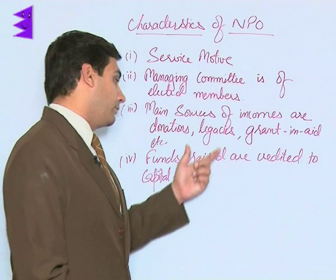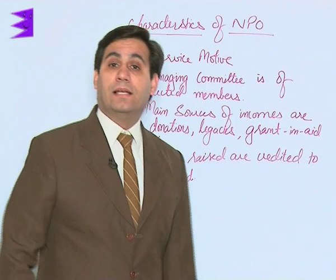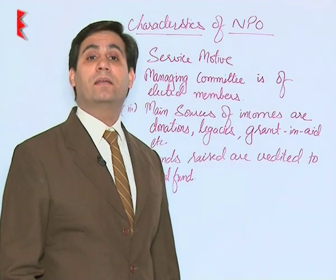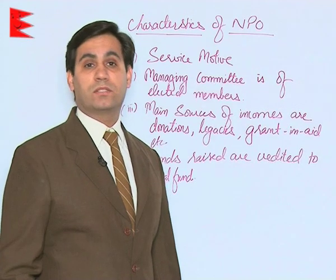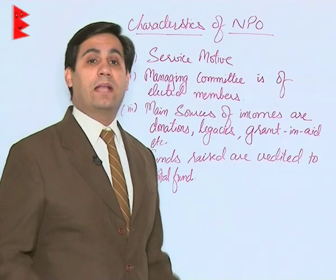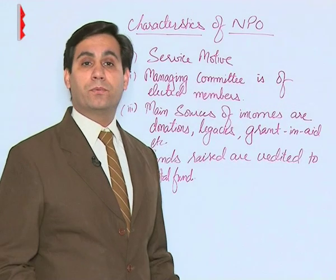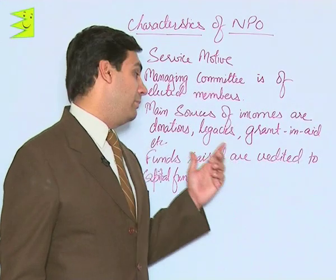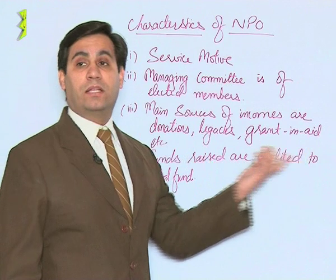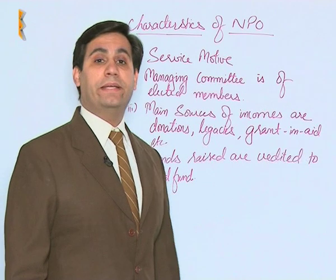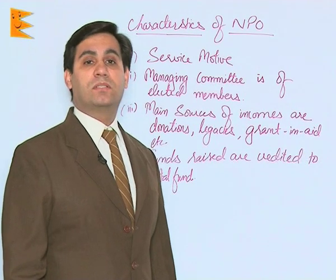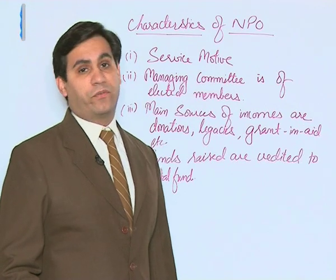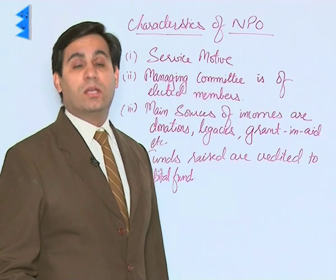Then we have legacies. Legacies are something that people leave behind in their will. For example, a person passes away and leaves a certain portion of his wealth for a particular charitable organization — that is called a legacy. Then we have grant-in-aid: sometimes governments also provide regular aid to certain nonprofit organizations because they are doing good work.